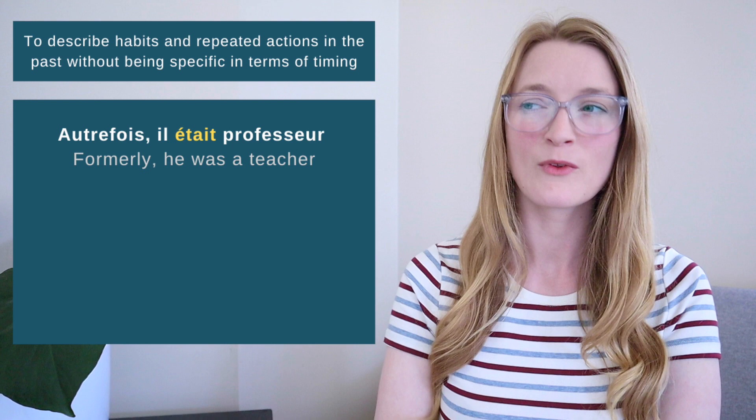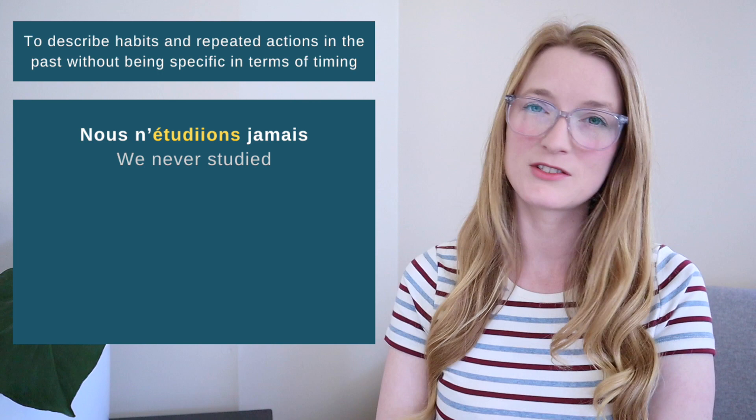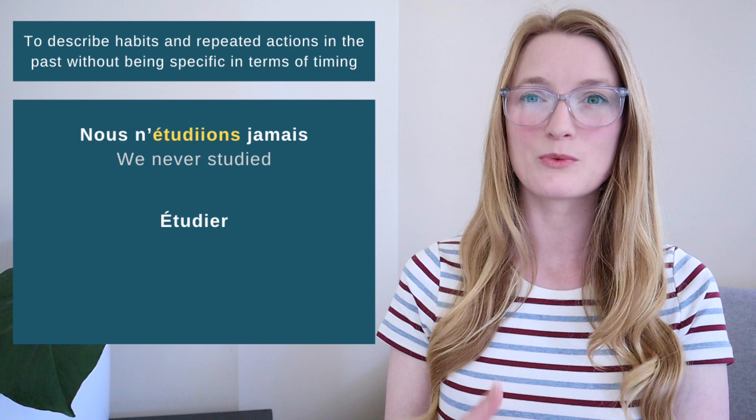For example: 'Autrefois, il était professeur' — formerly, he was a teacher. That uses the verb être conjugated in the imparfait. And 'Nous n'étudiions jamais' — we never studied. That uses the verb étudier, which we saw yesterday when learning how to build the imparfait. When you understand this first point, you can do exercise 3.5.